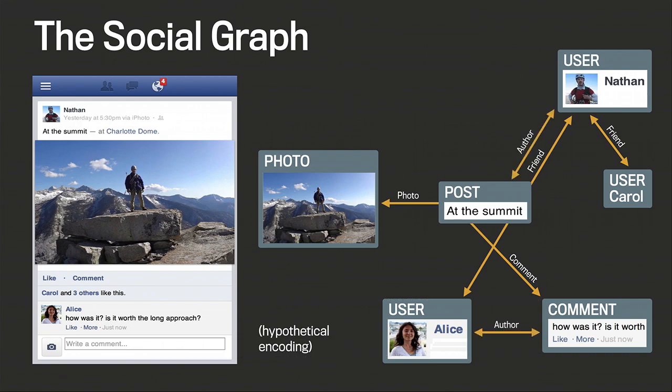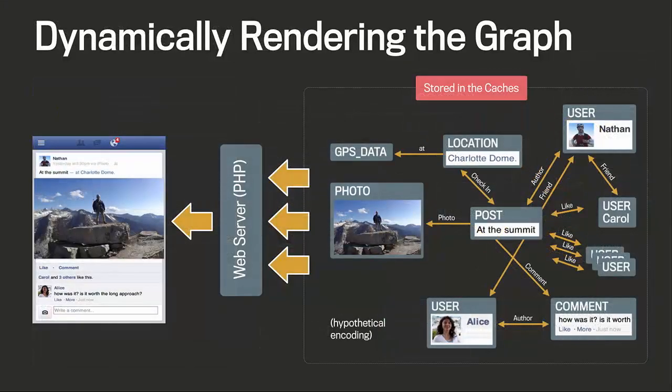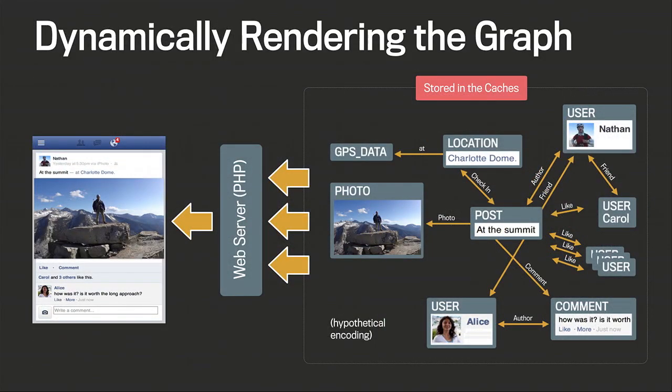Posts and comments have authorship, there are likes, the post has location data, and location data has GPS data. I hope to convince you that these small pieces of data that we routinely fetch over and over are what makes caching important. These pieces of data are stored in caches, and the web servers pull this data from the caches and then dynamically render what you finally see on the site.